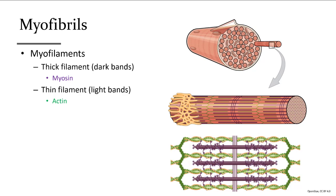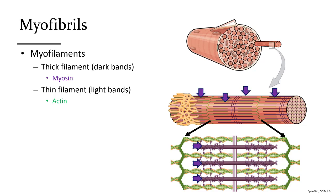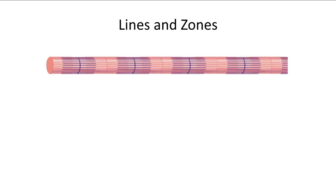The myosin attaches to actin and pulls the Z-lines toward the middle of a given sarcomere, making the two Z-lines come together. There are several bands and lines with names: I-bands are only actin — they are the light regions. The Z-line is the center of the I-band and marks the end of sarcomeres.